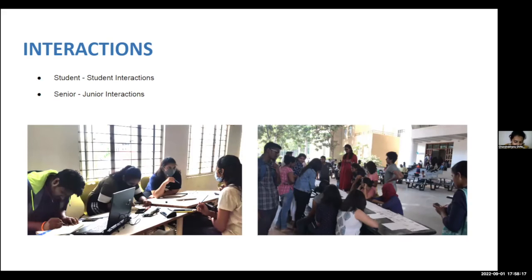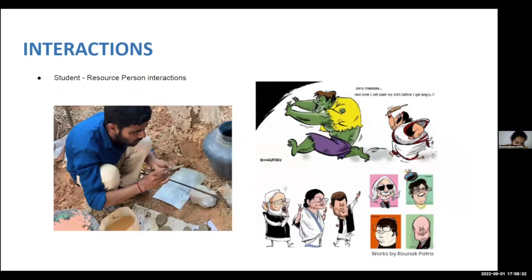In terms of senior-junior interactions, it plays an important role, as in the real world we all work in teams of different people having different levels of experience and keep learning from each other. Another important interaction, especially for the full-scale workshop, was the student and resource person interaction. The resource person is someone who need not be an expert in the craft but has enough experience to demonstrate to the students, and may or may not be a teacher. Our school has invited many non-academicians, including traditional craftsmen, as part of the full-scale workshops.